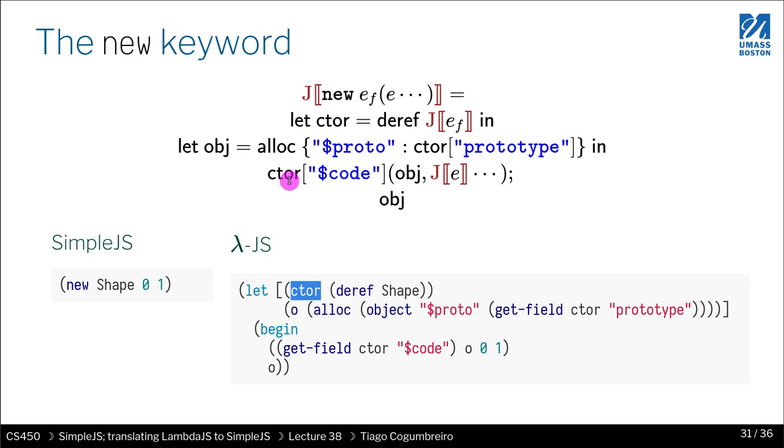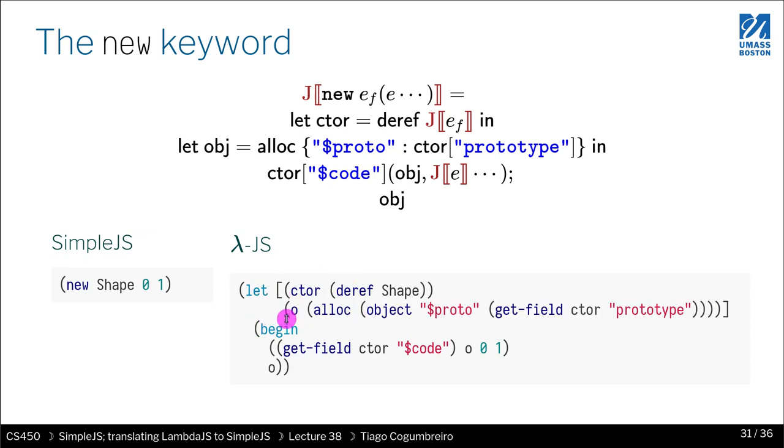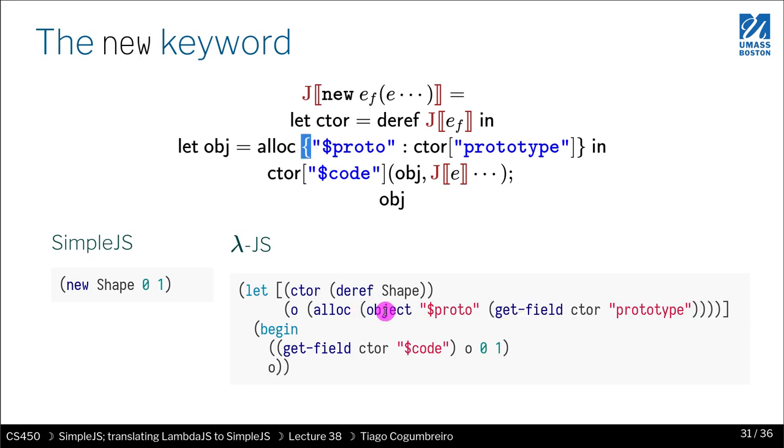Then we're declaring another variable, which is O. In LambdaJS, you can do multiple declarations. This is just to say that this is a nested let. We're declaring the second variable here, but it gets printed out flattened when it's printed out. The second thing we're declaring is this O for OBJ. Then what you see here is alloc, and then inside, what do we do? We create an object. First field is Proto.